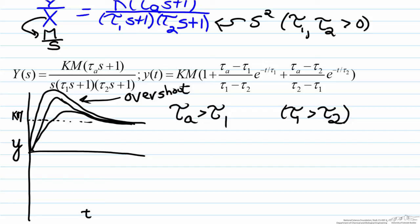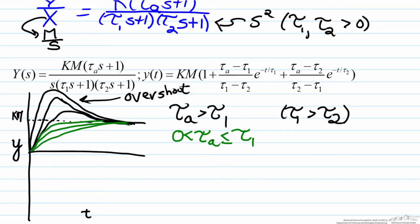The second case is when tau a is between zero and tau one, again assuming tau one is greater than tau two. What we get here is a general overdamped response — stable and monotonic, reaching the steady state value.